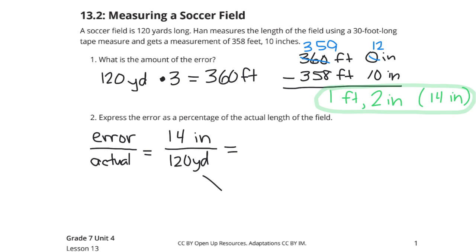And so, our 120 yards we already established at 360 feet by multiplying by 3 feet in a yard. Then, if we multiply by 12 inches in a foot, this is 4,320 inches.